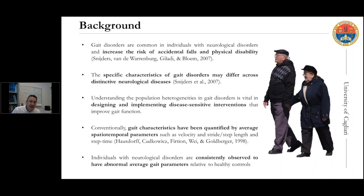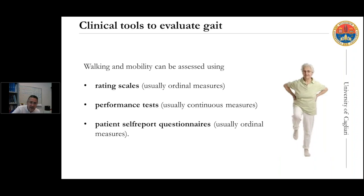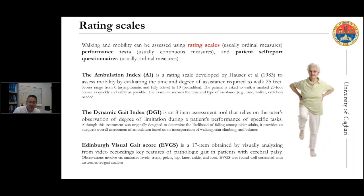Usually, most analysis of gait in clinical settings is performed using visual observations, but also measuring with simple techniques like timed tests, and main spatial temporal parameters like velocity, stride or step length, and step time. In clinical settings, tools like rating scales, performance tests, and patient-reported questionnaires are also very commonly used.